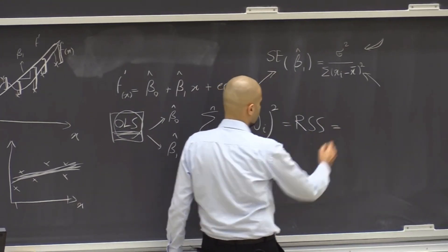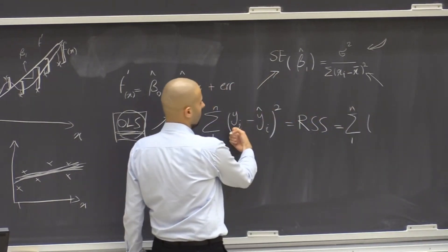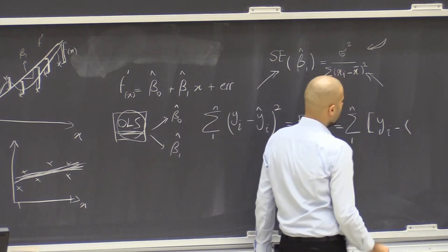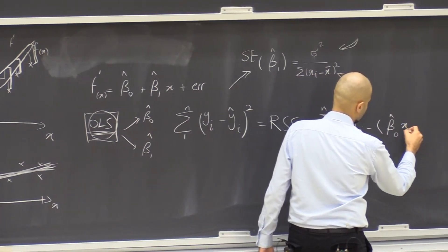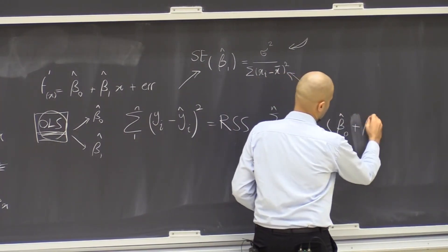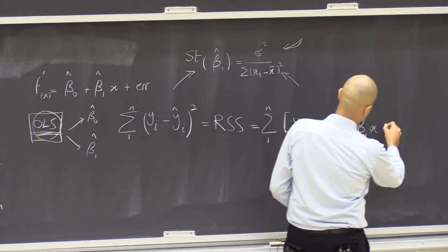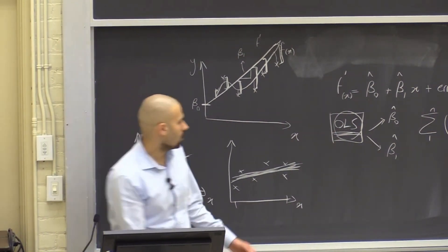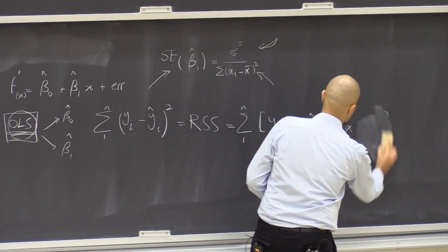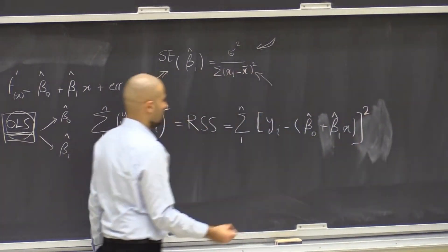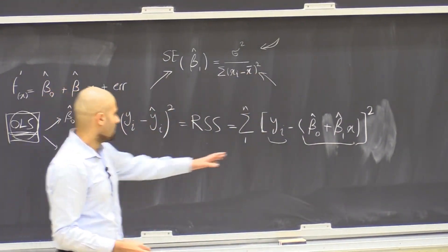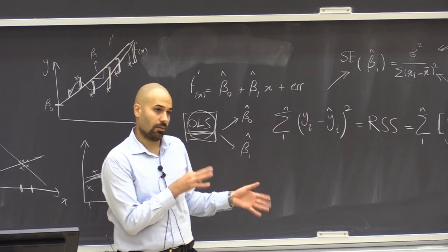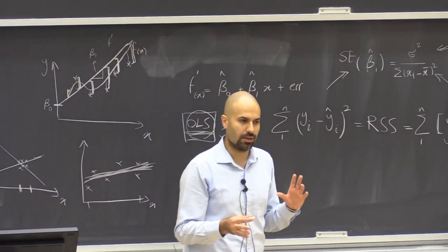RSS can also be written as the sum of squared differences between the actual value y_i and the prediction y hat i, where y hat is beta zero hat plus beta one hat times x. If our predictions are very good, they match the true value and RSS becomes zero — that's the situation where we fit perfectly to the historical data. Last week we talked about how fitting too hard to the data is not a good idea because of bias-variance trade-off and overfitting.